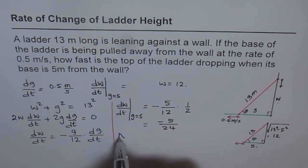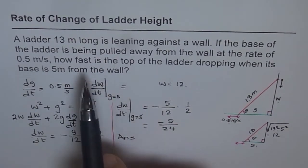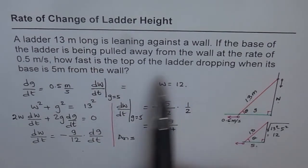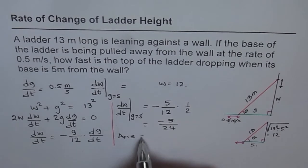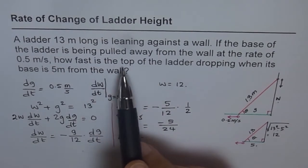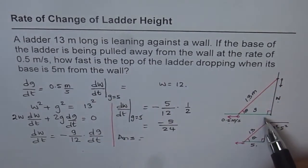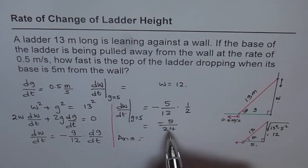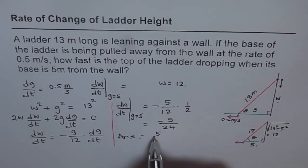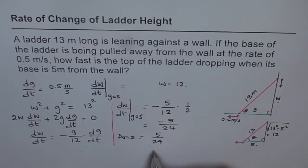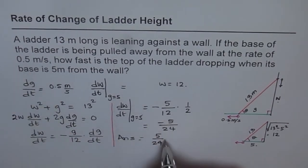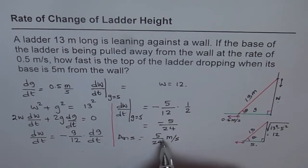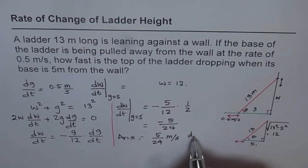And now, we can write it down in the words asked for: how fast is the top of the ladder dropping when its base is 5 meters from the wall? We can write the rate of change of the height when the ladder is 5 meters from the wall is 5 over 24. You can always write it in decimals also. Units are meters per second. Negative indicates decreasing.